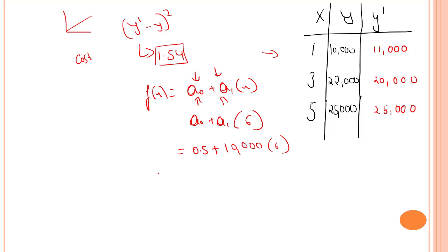So, the y dash value that we will be getting will be 60,000 plus 0.5, 60,000.5. This is the y dash value that we will be getting for six years of experience.